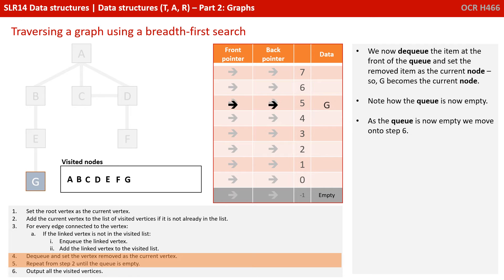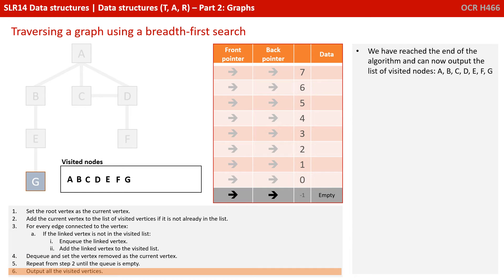We now dequeue the item at the front of the queue and set the removed item as the current node, so G has now become the current node. Note how the queue is now empty. As the queue is now empty, we move on to step 6. We've reached the end of our algorithm, and we can now output the list of visited nodes: A, B, C, D, E, F, and G.